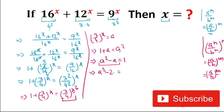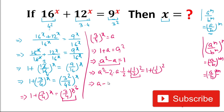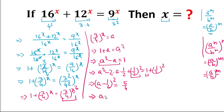To complete the square, we write a² - 2·a·(1/2) + (1/2)² = 1 + (1/2)², because we added (1/2)² to both sides. This simplifies to (a - 1/2)², which is in the form a² - 2ab + b². The right hand side becomes 1 + 1/4 = 5/4.